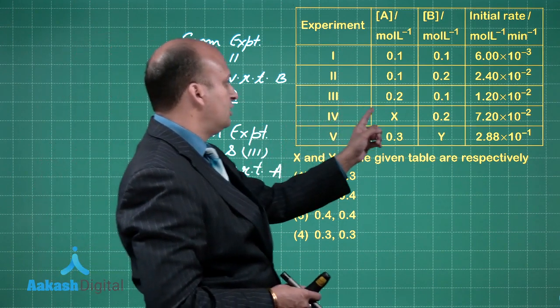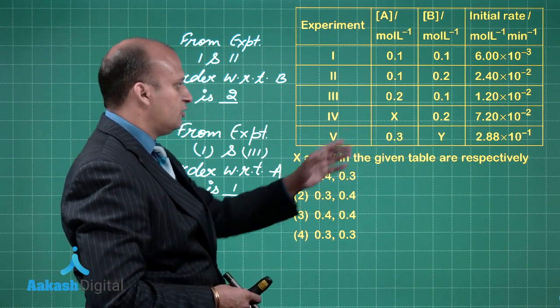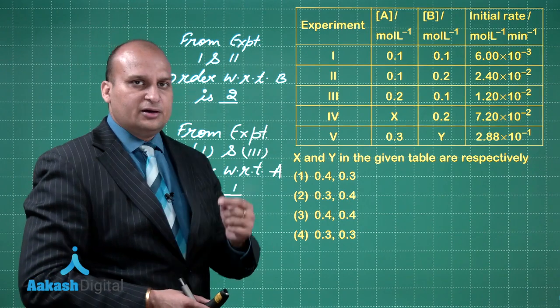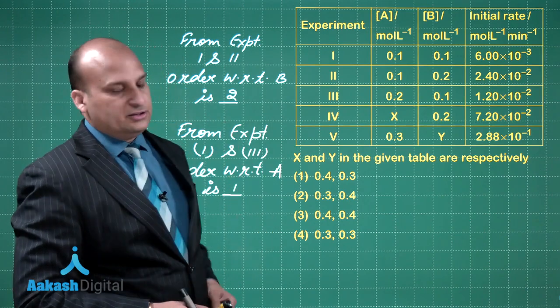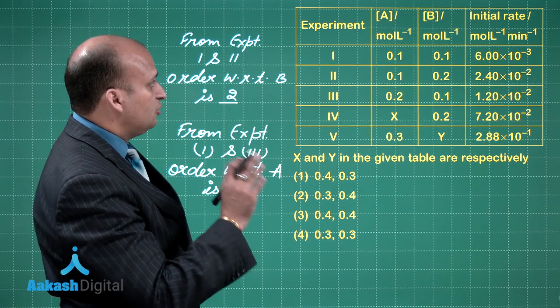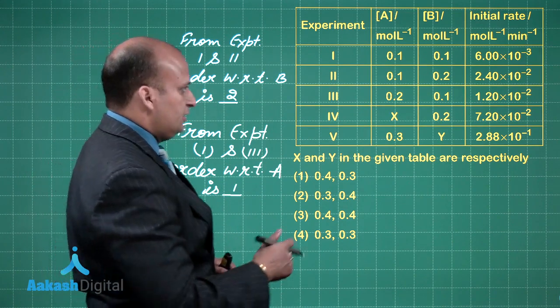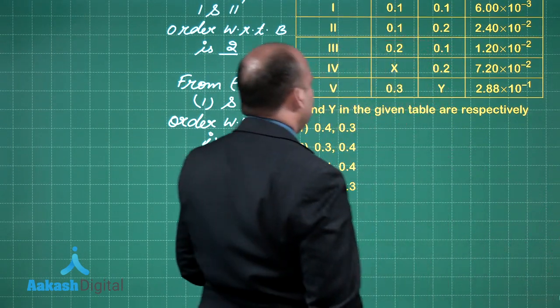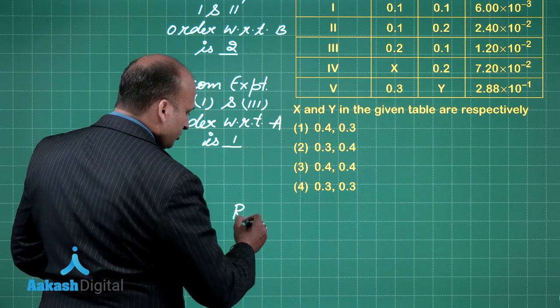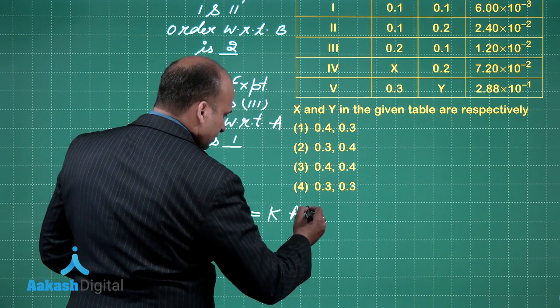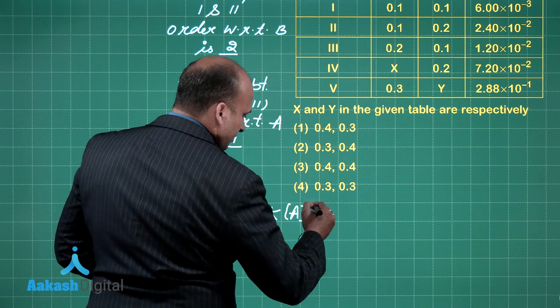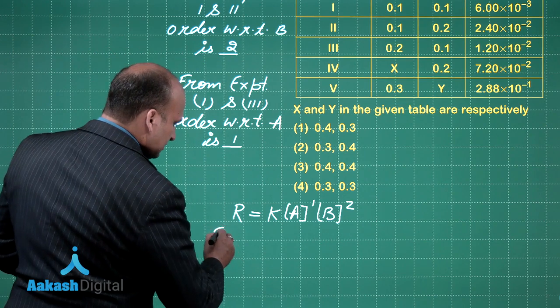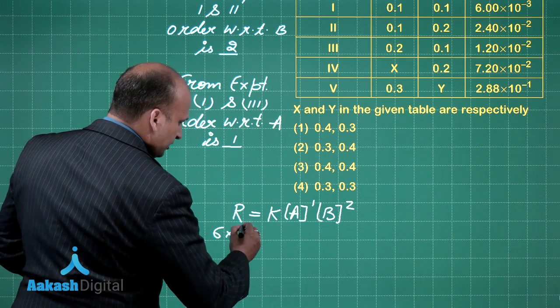Now we have to find out the concentration of A raised to power 1, concentration of B raised to power 2. Here things get slightly tricky, because there is something we actually forget in such calculations - calculation of the rate constant. Let me use the first experiment. From here, I can say that R equals K times concentration of A raised to power 1, concentration of B raised to power 2. The value of R is 6 into 10 raised to power minus 3 equals K.